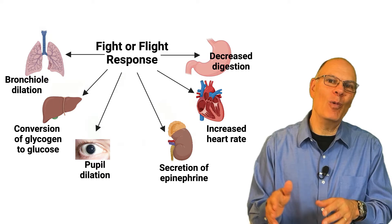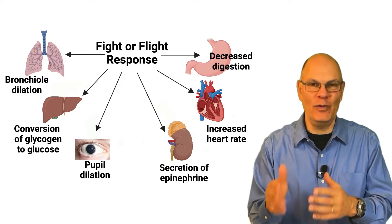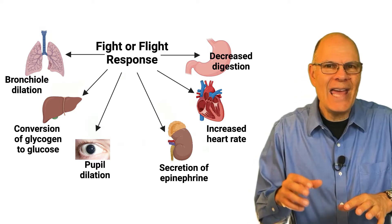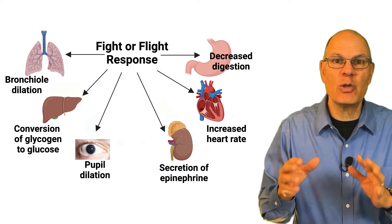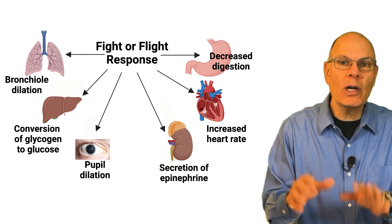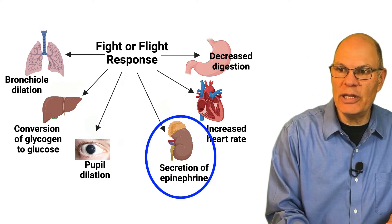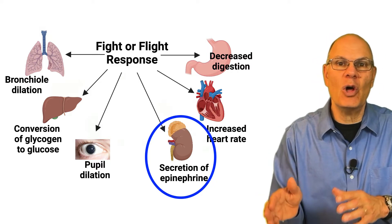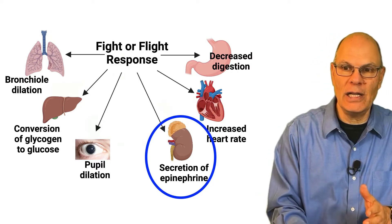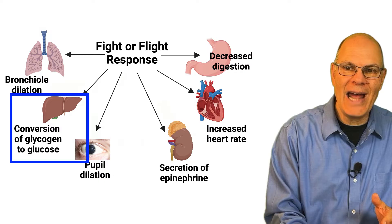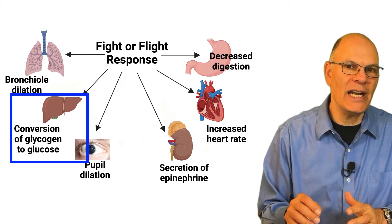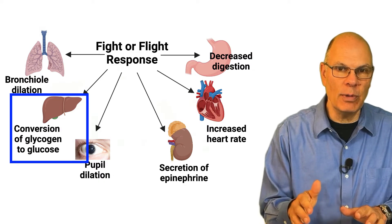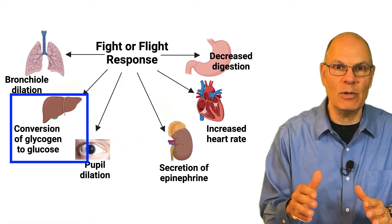The context for what we're about to review or learn is the fight or flight response, and that has effects throughout our bodies. One of the effects is on the adrenal glands, which produce a hormone called epinephrine or adrenaline. That acts upon the liver to get it to produce glucose that goes into the blood as part of the fight or flight response.